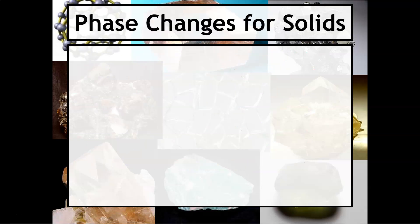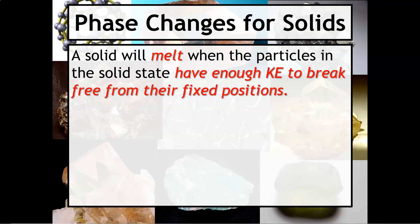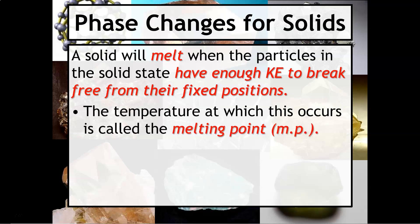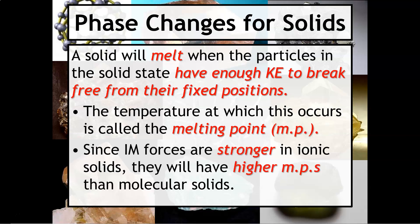Let's talk about phase changes for solids. A solid will typically melt when the particles in the solid state have enough kinetic energy to break free from their fixed positions. The temperature at which the substance will melt is called the melting point, abbreviated M.P. Since the intermolecular forces are stronger in ionic solids, they will often have higher melting points than molecular solids.